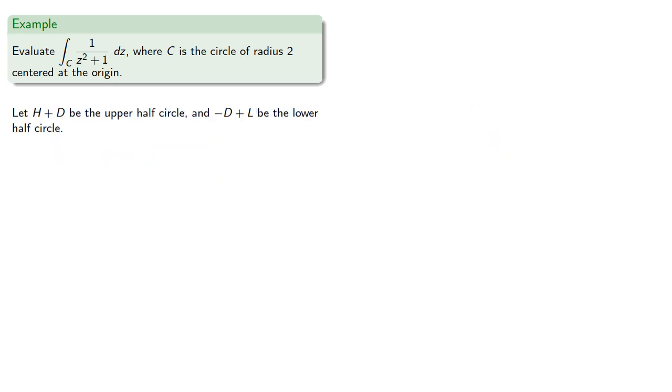So let H plus D be the upper half circle and negative D plus L be the lower half circle. The additivity of the integral allows us to rewrite our integral accordingly.